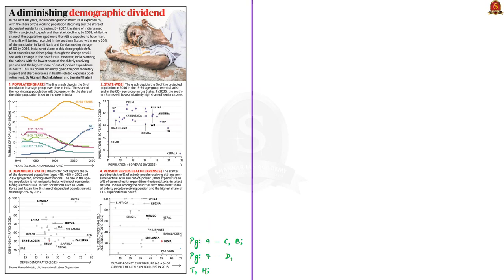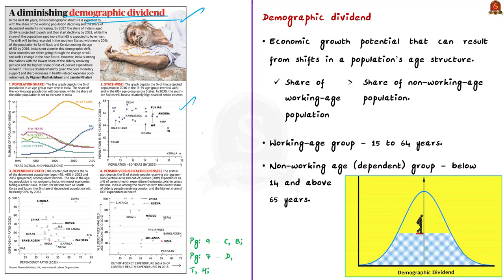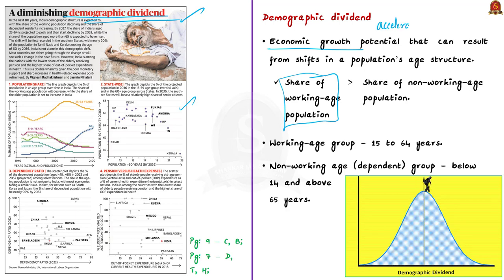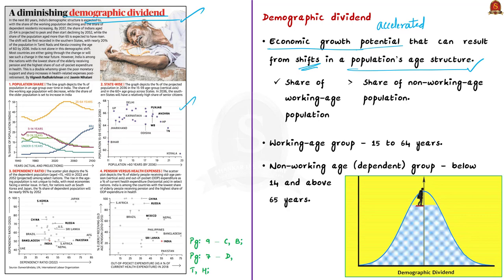The first discussion covers a data point on the demographic dividend of India and other countries. It provides data on working age population, and states with high elderly population. Demographic dividend refers to the economic growth potential that results from shifts in a population's age structure, mainly because the share of working age population is larger than the share of non-working age population.